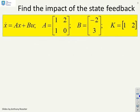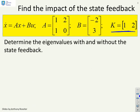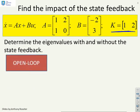First, an example: find the impact of the state feedback. I've given the state feedback here, K equals [1, 2], and you'll see you've got an A matrix and a B matrix. We want to know what does this K do to the system behavior? Determine the eigenvalues with and without the state feedback. In the open loop, without the feedback, we do lambda I minus A equals 0, the determinant.